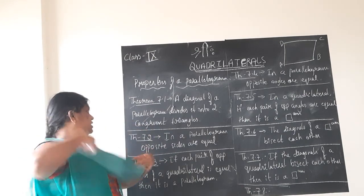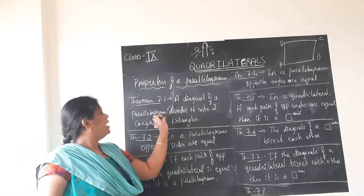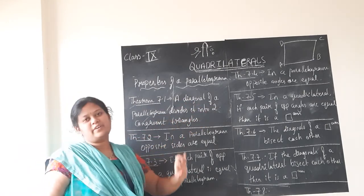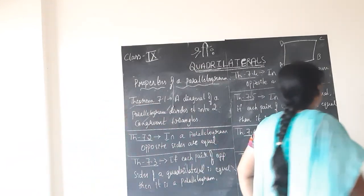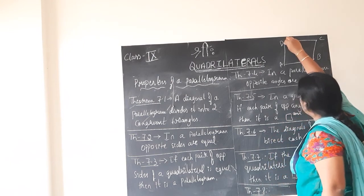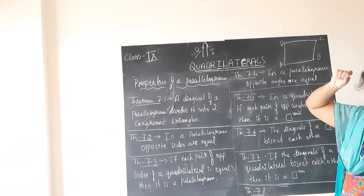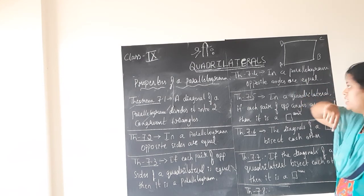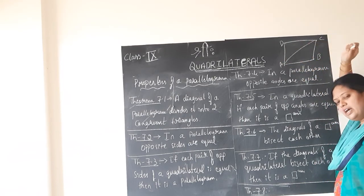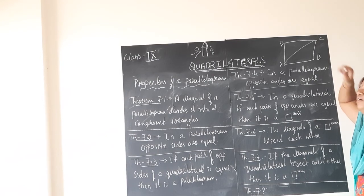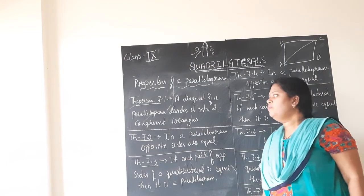This is Theorem 7.1. It states that a diagonal of a parallelogram divides it into two congruent triangles. You already know this statement. We used it under the angle sum property of a quadrilateral — to prove that the sum of all four angles of a quadrilateral is 360 degrees. In parallelogram ABCD, we drew one diagonal which divided the quadrilateral into two triangles.